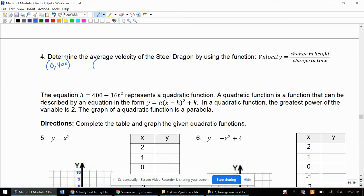So the first point we're going to use is zero comma 400, the starting height. And the last point we'll use is five comma zero, where the height was at zero and time was at five seconds.